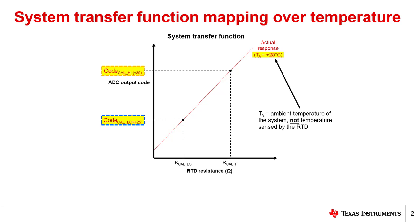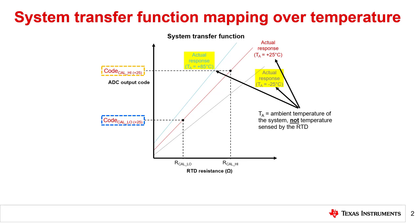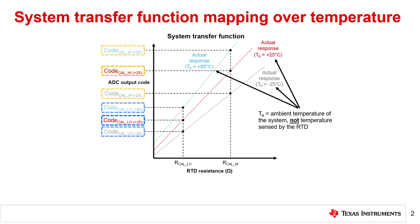However, as discussed in previous Precision Labs modules, the magnitude of each error source can change with temperature, which in turn changes the system transfer function. For example, hypothetical transfer functions at negative 25 degrees Celsius and 85 degrees Celsius are shown in gray and light blue respectively. Since the transfer function is changing across ambient temperature, the code range corresponding to the RTD curve can change as well. Possible code ranges are shown on the left for transfer functions in gray and light blue. These represent additional system error introduced by the change in temperature.